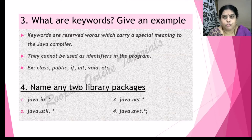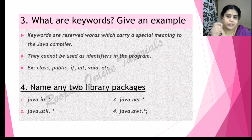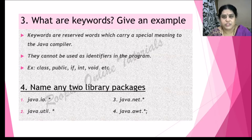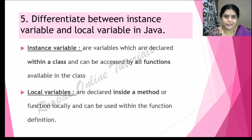Name any two library packages. You should always start with: java.util and java.awt — those are library packages whose names start with the word 'java'. You can give any two or any four names you remember. We have java.util, java.awt, java.lang — which is the default package in Java — and also java.net, java.swing, and many more library packages in Java.